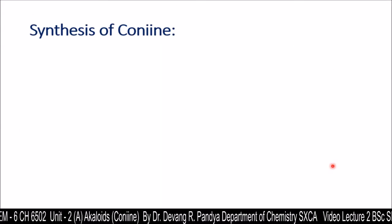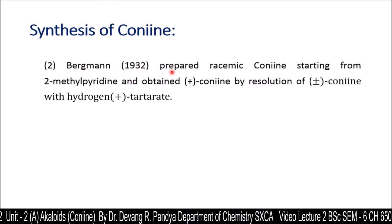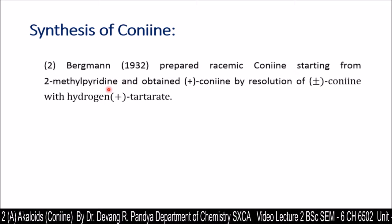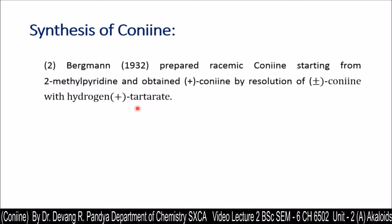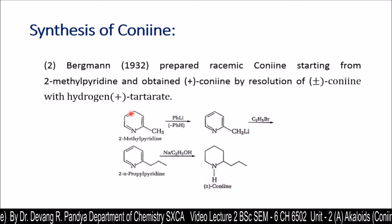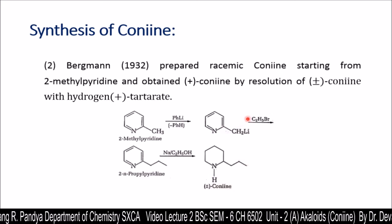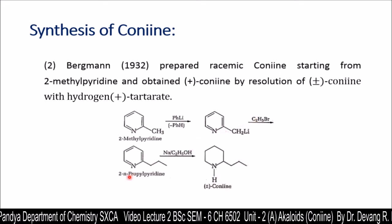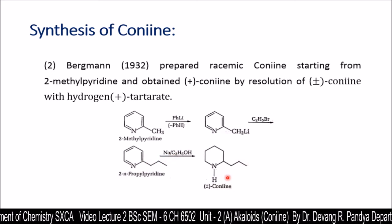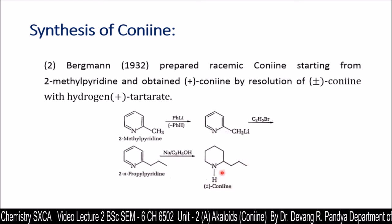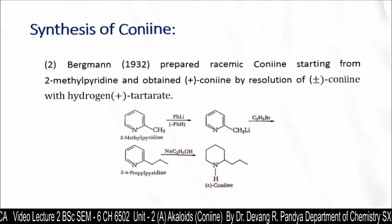The second synthesis is by Bregman. In 1932, he prepared racemic conine starting from 2-methylpyridine and obtained conine by resolution of the optical isomers with hydrogen tartrate. 2-methylpyridine is treated with phenyl lithium to give an allyl lithium derivative, which is further treated with methyl bromide to give 2-n-propyl pyridine. On reduction with sodium and ethanol, we get conine, and then by separation of the racemic mixture with hydrogen tartrate, the pure conine is obtained.